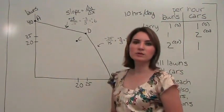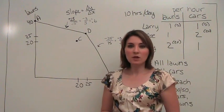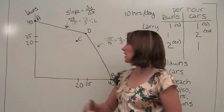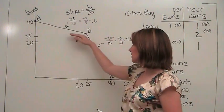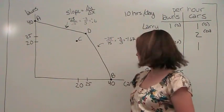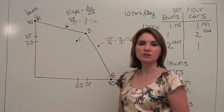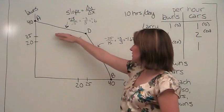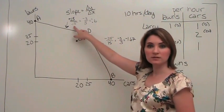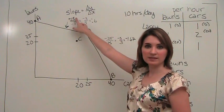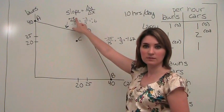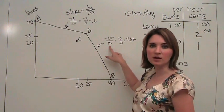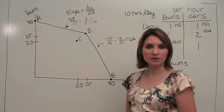When we're talking about the production possibilities frontier, the slope represents how much of one item we have to give up to get more of the other. In this case, it represents, for each additional unit of car washing, how much do we have to give up in terms of lawn mowing. Here, in order to get twenty-five cars, we had to give up fifteen lawns. And here, in order to get another fifteen cars, we had to give up twenty-five lawns.